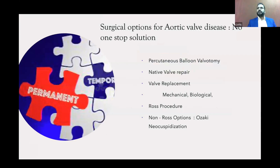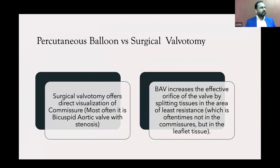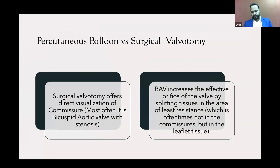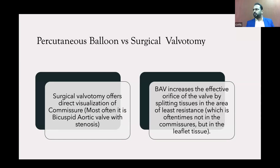Surgical options for aortic valve disease — there is no one-stop solution. It ranges from cath lab to surgery. Surgery includes valve repair, replacement, and the Ross procedure, and now things come to non-Ross options. Percutaneous balloon increases the effective orifice area by splitting tissue at the area of least resistance, usually not at the commissure, so the valve leaflet tears and the valve area increases. But these children will come back with aortic regurgitation. Surgical valvotomy offers direct visualization for meticulous commissurotomy, but needs open surgery and a heart-lung machine.